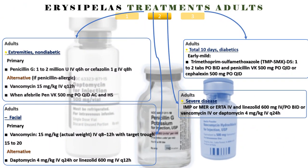Extremities, non-diabetic form. Primary: Penicillin G 1 to 2 million units IV every 6 hours, or cefazolin 1 gram IV every 8 hours. Alternative, if penicillin allergic: vancomycin 15 mg/kg IV every 12 hours. When afebrile: Pen VK 500 mg by mouth 4 times a day AC and HS. Total 10 days.